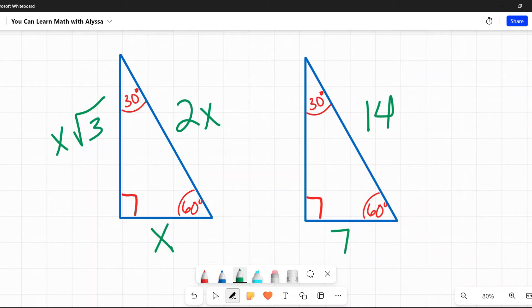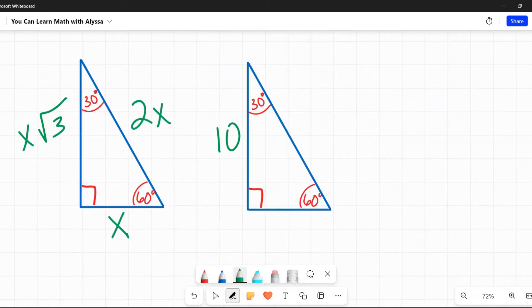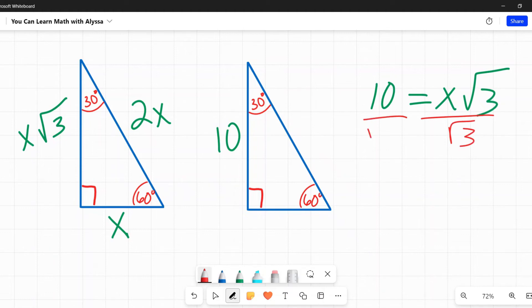The one wrinkle they are going to throw at you at some point is to give you a whole number over here on the side that is X square root of 3. To solve for the other sides, you will have to know how to simplify square roots. In this case, 10 would be equal to that X square root of 3.